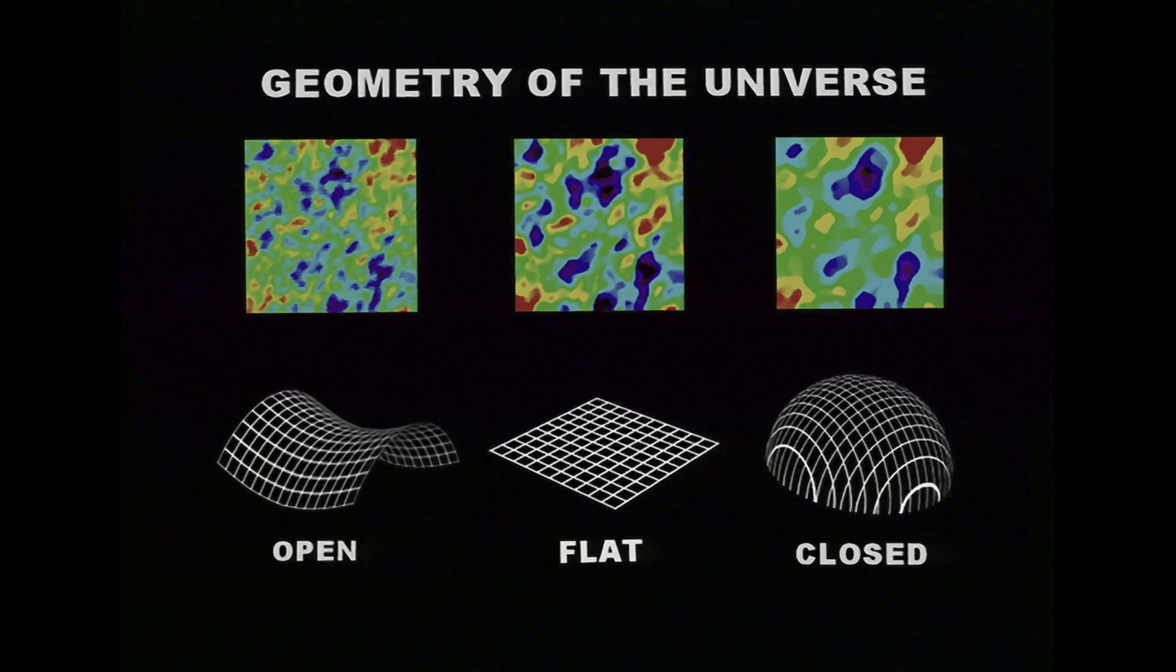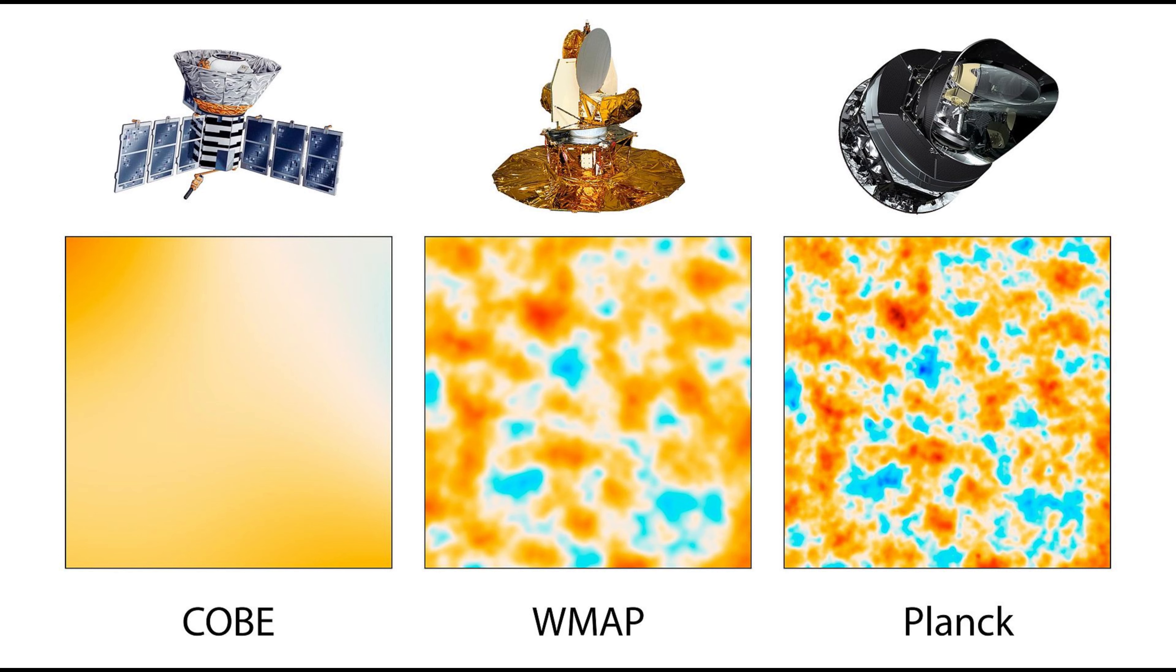In a curved universe, these fluctuations would be distorted in specific ways, but such distortions haven't been observed. This uniformity strongly supports a flat universe.